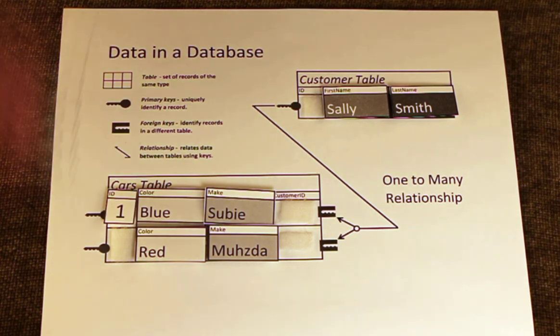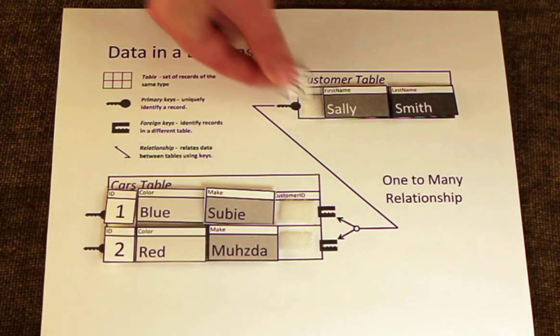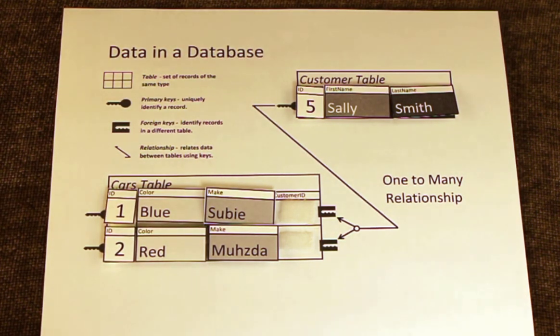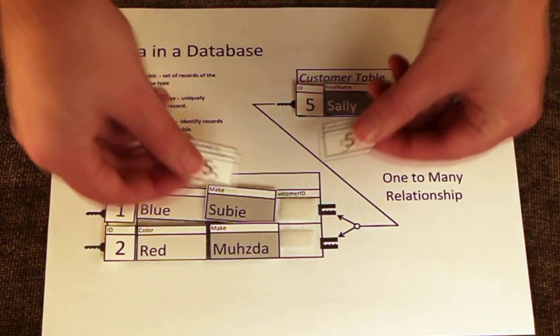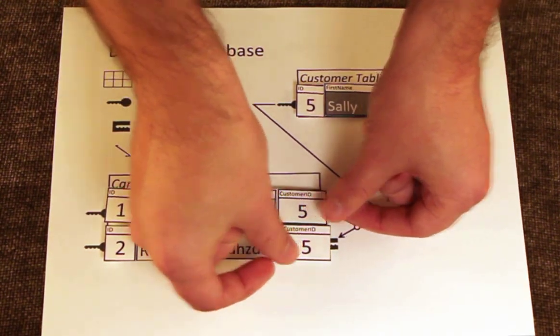Keys are used to relate the data in the tables. Primary keys uniquely identify records in a table, while foreign keys identify records in a different table.